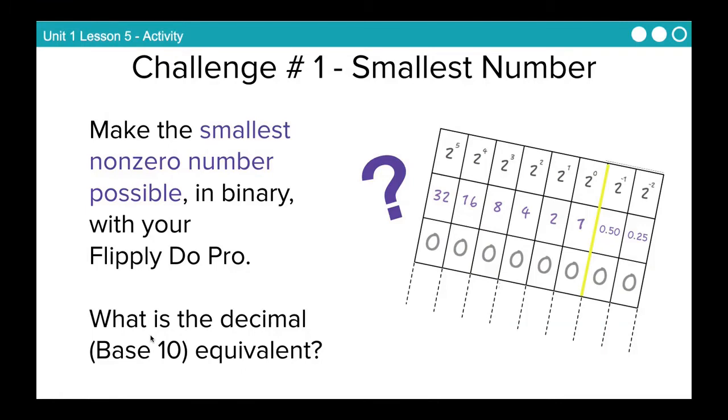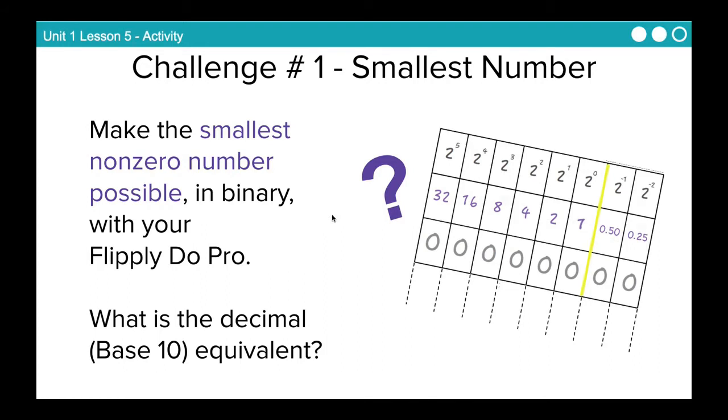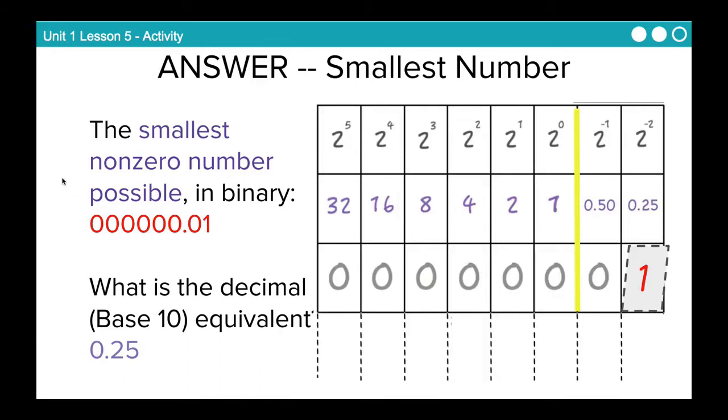Once you have finished making your Flippy-Doo Pro, I have a series of challenges here. And again, I want you to record your answers to all of these in your journal. So challenge number one. I want you to make the smallest non-zero number possible in binary with your Flippy-Doo Pro. And then what is the decimal equivalent? So what is the number up here that it translates to? Take a moment, pause the video, and answer that question in your journal. So you may have been able to figure that one out pretty quickly. The smallest non-zero number, we would just turn up the first digit here. It would be 0-0-0-0-0-0-0-1. And the decimal equivalent would be, for our Flippy-Doo Pro here, would be 0.25.